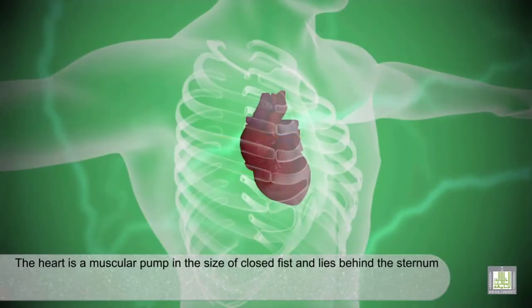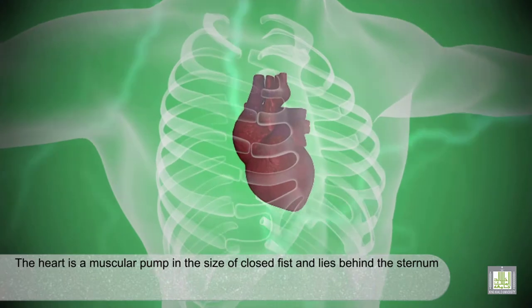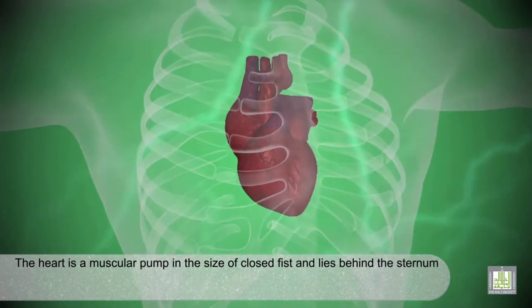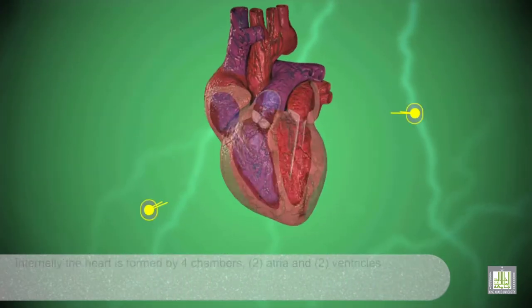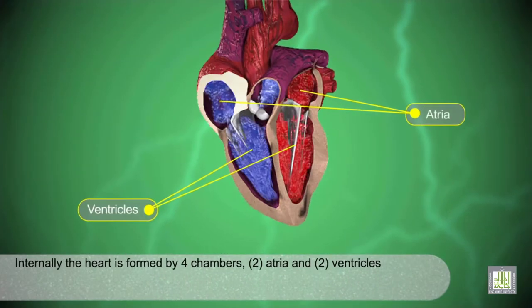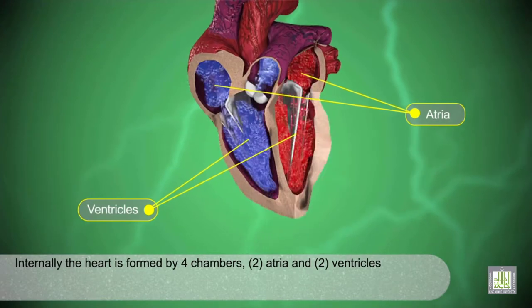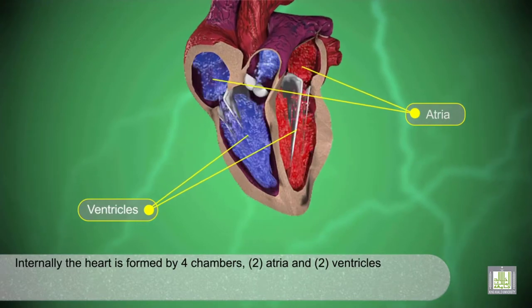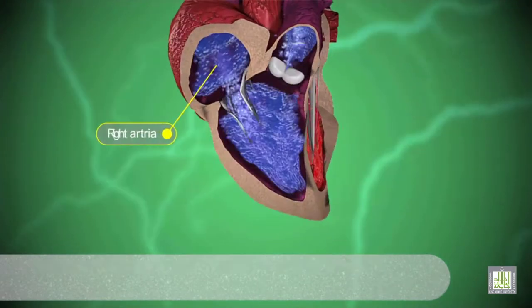The heart is a muscular pump the size of a closed fist and lies behind the sternum. Internally, the heart is formed by four chambers: two atria and two ventricles.